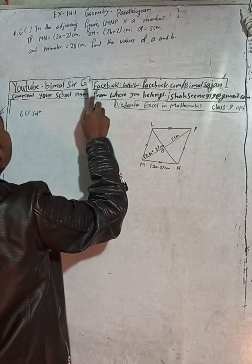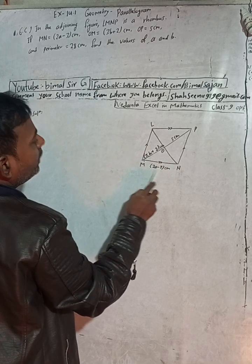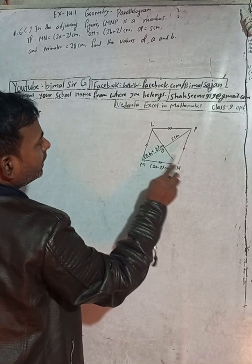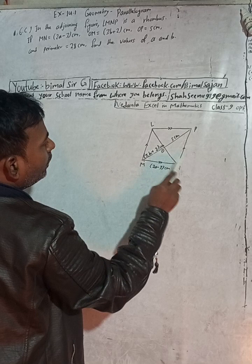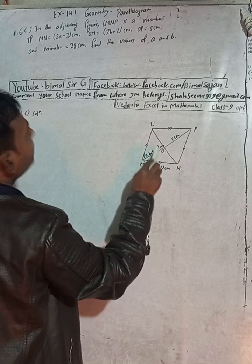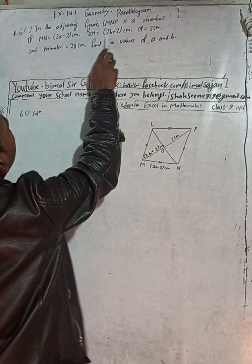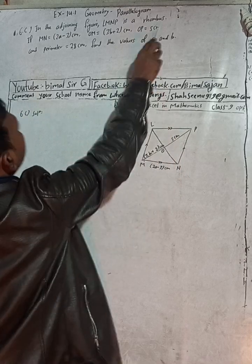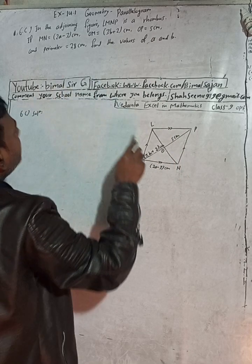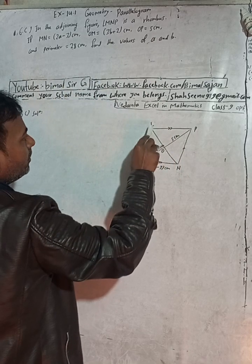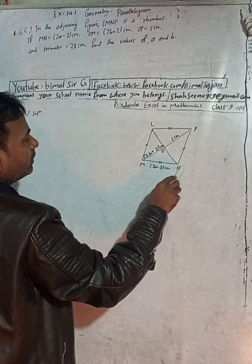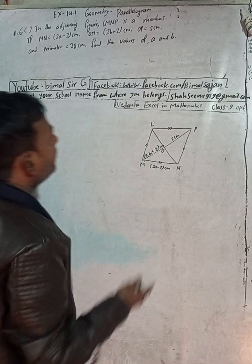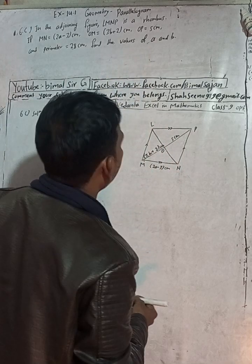If MN is equal to 2A minus 3, OM is equal to 3B plus 2, and OP is equal to 5 CM, and the perimeter is 28 CM. Perimeter means this side plus this side plus this side plus this side — that total is 28 CM. Find the value of A and B.